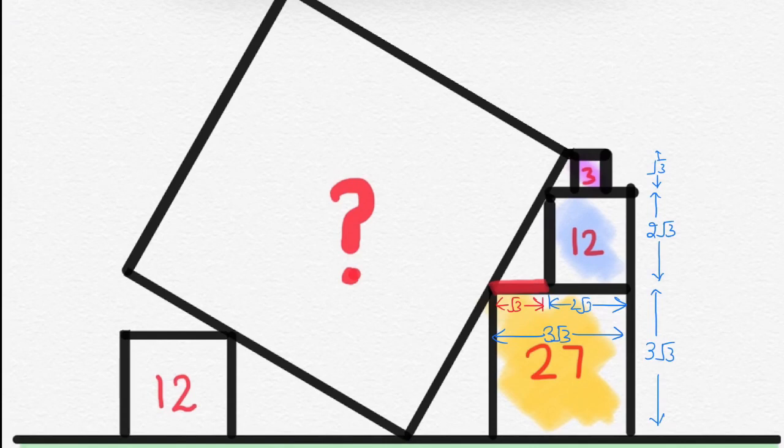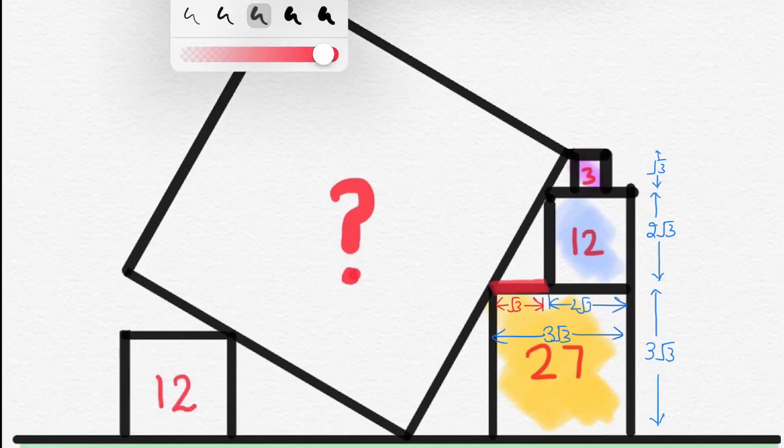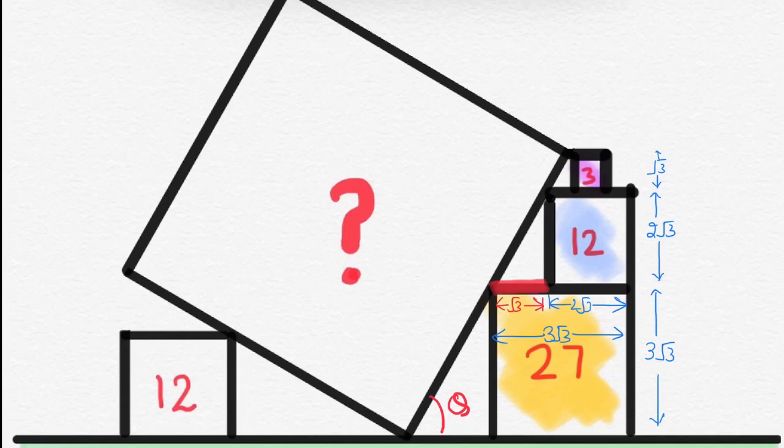Now, get ready to see the technical part. If I assume this angle, this angle is theta then this angle will also be theta. Why so? Because this is corresponding angle drawn by transversal line on parallel line. So, both the angle will be equal.